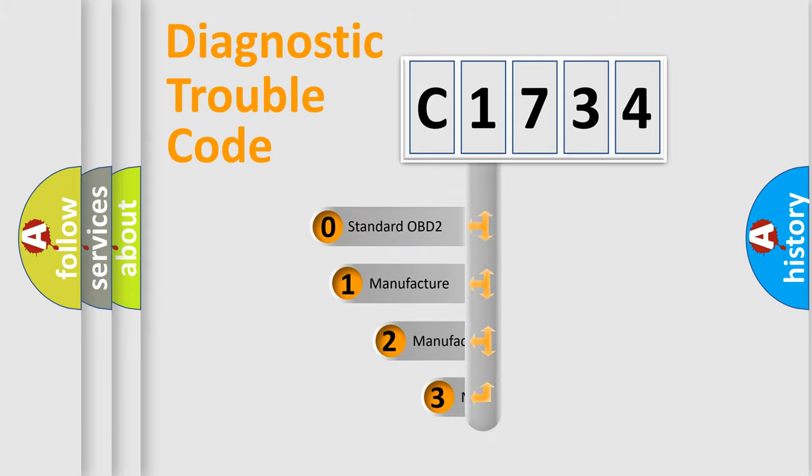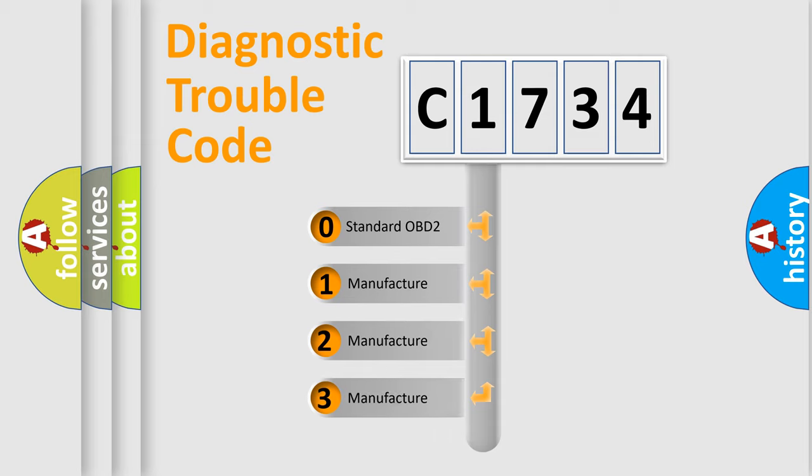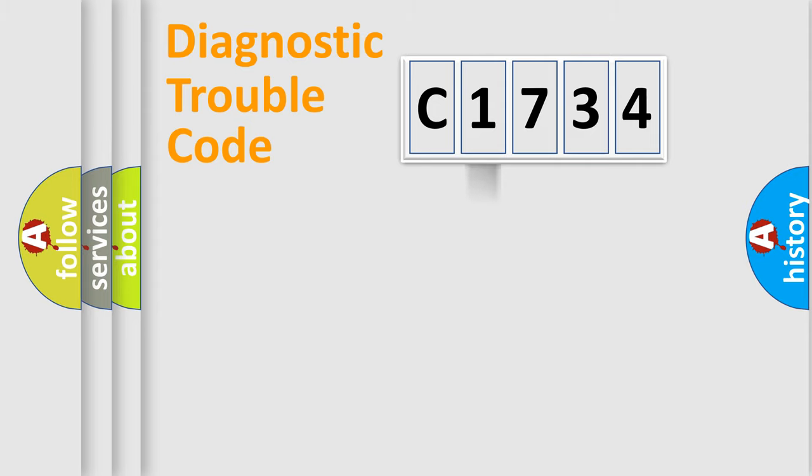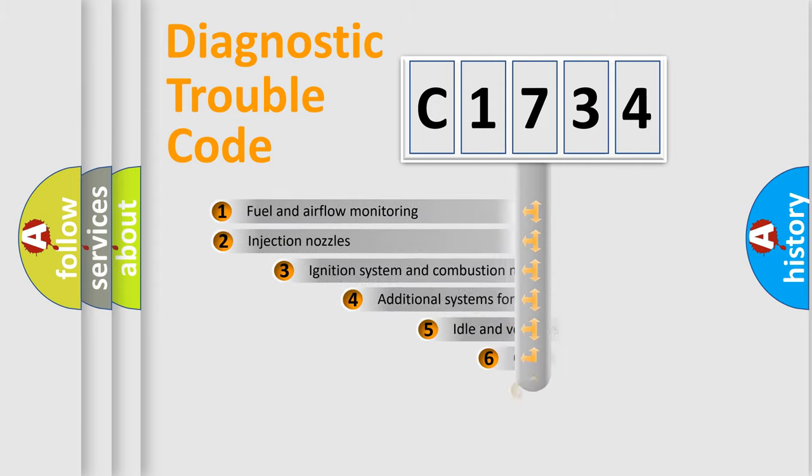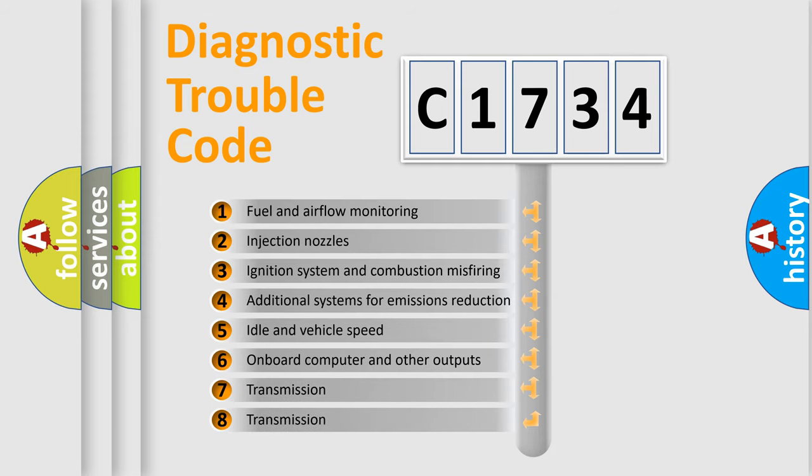This distribution is defined in the first character code. If the second character is expressed as zero, it is a standardized error. In the case of numbers 1, 2, or 3, it is a more precise expression of the car-specific error.